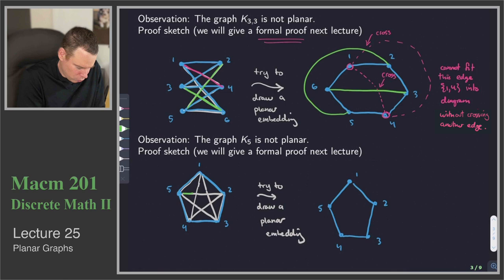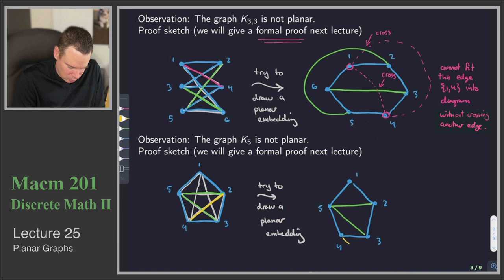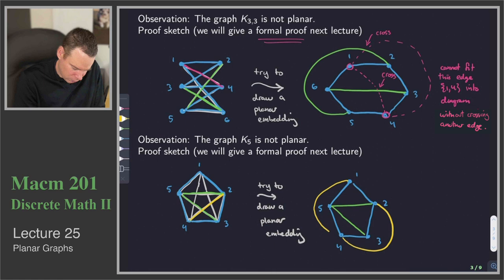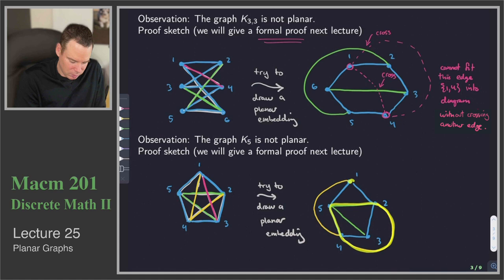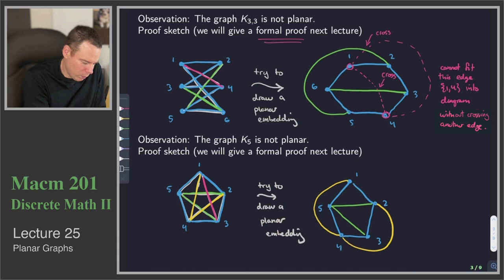Let's get a feel for that in terms of the drawing. I'll draw in edges 5-2, 5-3, 4-2, then 1 to 4, making sure I don't cross any existing edges. And then I have that final edge from 1 to 3. We've landed in the same problem as before — there's a cycle, vertex 3 is inside and vertex 1 is outside. There's no way to connect them without crossing that yellow cycle. At least in terms of how I started this diagram, there's no way to fit that last edge in.